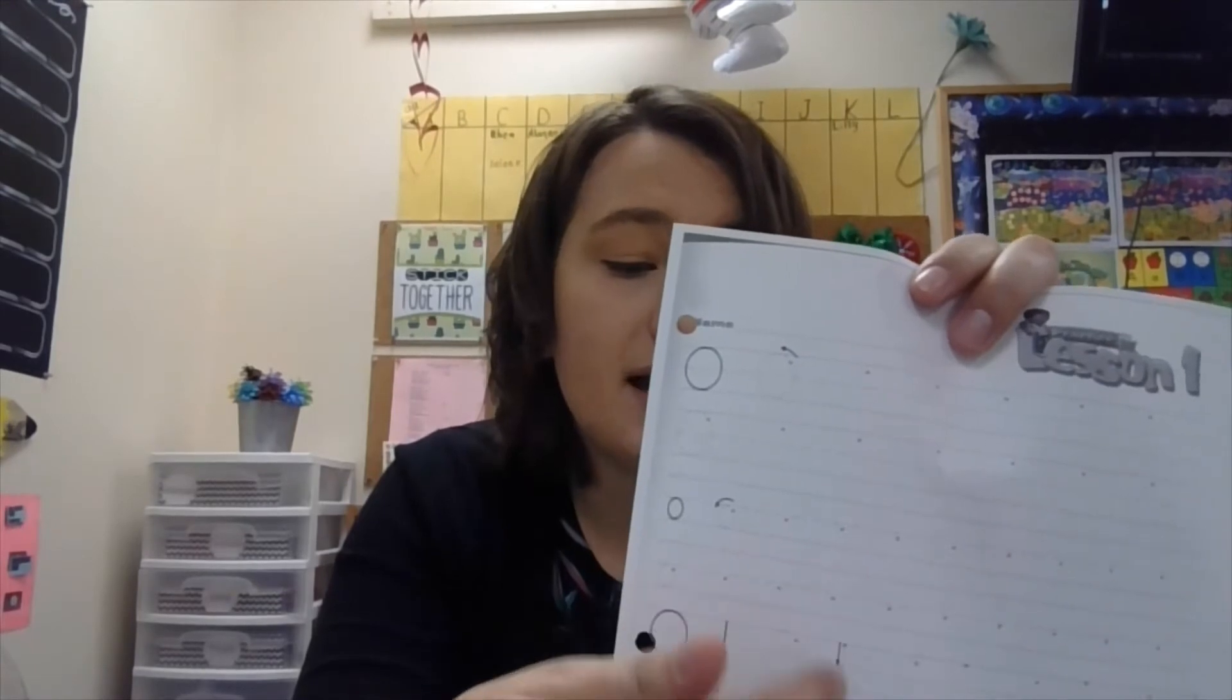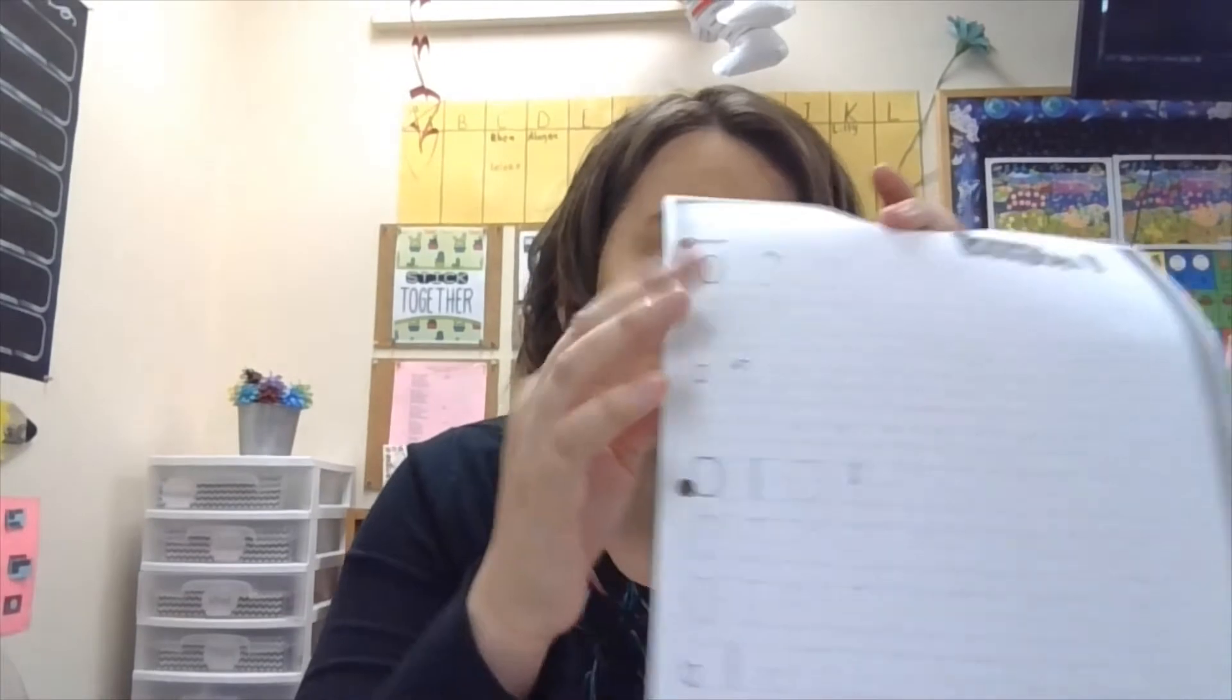Over here, you're going to do a circle and a line, a circle and a line, circle, line. Do that pattern over and over. Same thing right here. Then you're going to do lowercase circle and line. Same thing down here, same thing down here. That should be pretty easy. It shouldn't take you very long. When you are done, make sure you use a pencil so that you can erase if you need to. And when you're done, we're going to move on to phonics. Go ahead and pause, do your handwriting, come back for phonics.